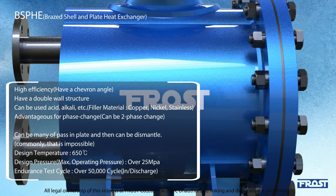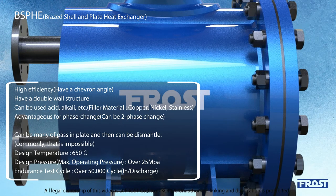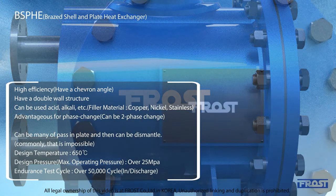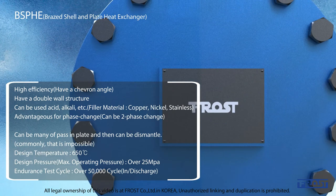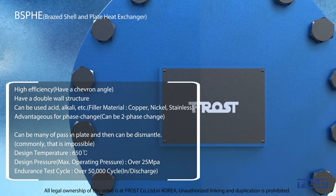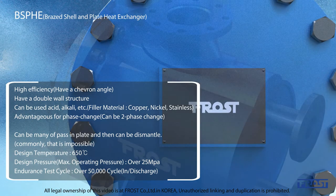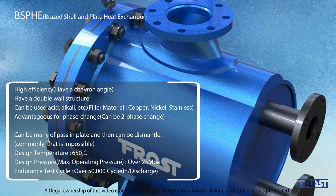3S: Small Space — 40 to 50% less than Shell and Tube for units over 40 kW. Small Price — 50% off Shell and Plate. Strong on Pulsation. High Efficiency — featuring a Double-Walled Structure, with a selection of brazen filler material available for use with corrosive fluid.